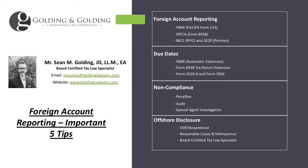Generally, the way the US works is like this. US persons — which includes US citizens, legal permanent residents, and foreign nationals who meet substantial presence — if you fall into one of those categories, you're considered a US person. As a US person, you're required to report your worldwide income as well as disclose foreign accounts, assets, and investments on various international information reporting forms, depending on the category of the asset, the total value amount, and sometimes based on your filing status.